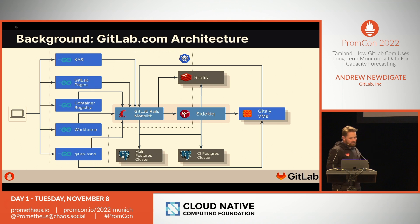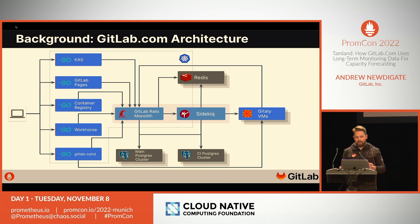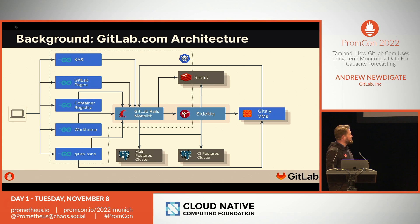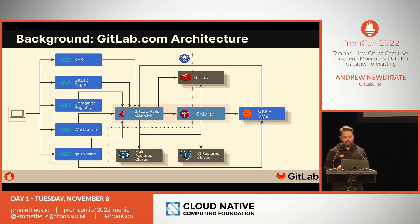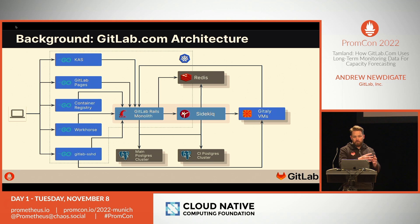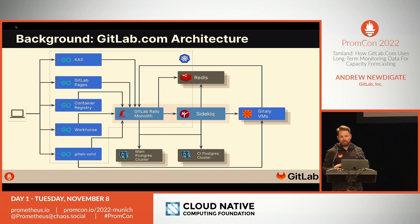Starting on the left, we have several front-end services that handle incoming requests. For the most part, these are written in Go. In the center of the application, we have this monolithic Rails application, which the majority of our product engineers spend most of their time working on. This runs as a Ruby on Rails web application, and it also has background processing taking place through Sidekiq.